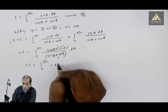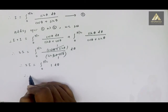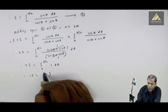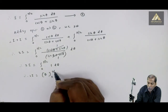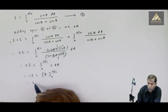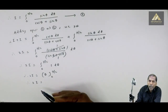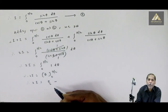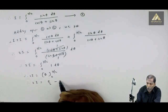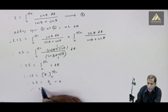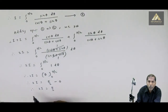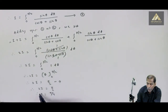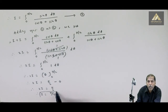The integral of 1 d theta gives theta, with limits 0 to pi by 2. Substituting the upper limit pi by 2 and then the lower limit 0: 2I equals pi by 2 minus 0. Since 2 is multiplying on the left, it divides on the right, giving the total answer I equals pi by 4.